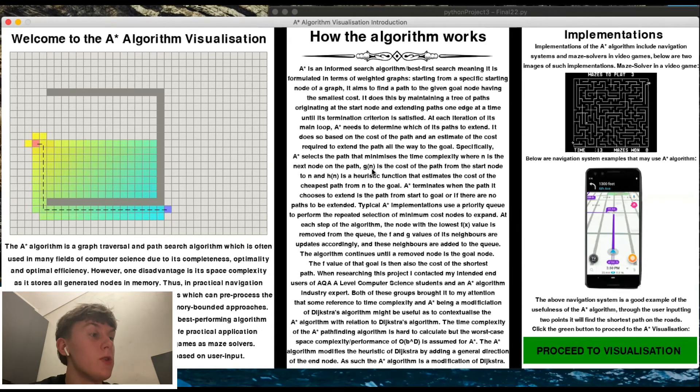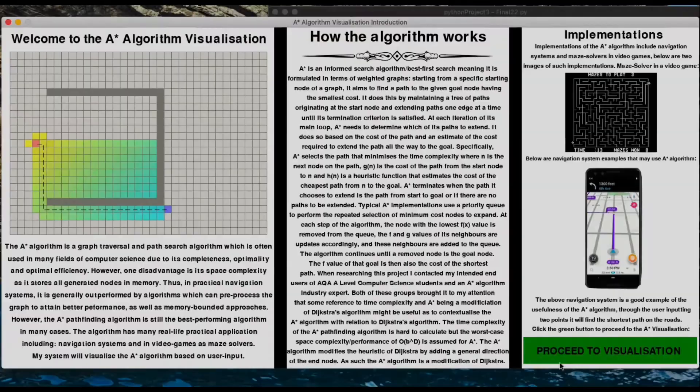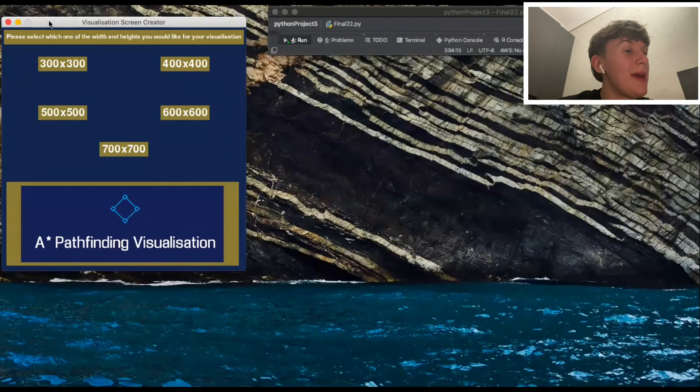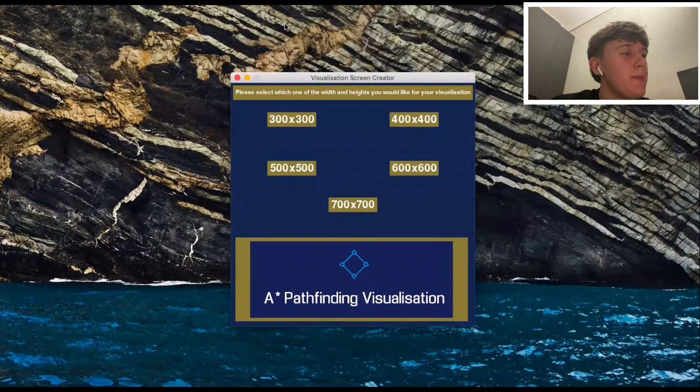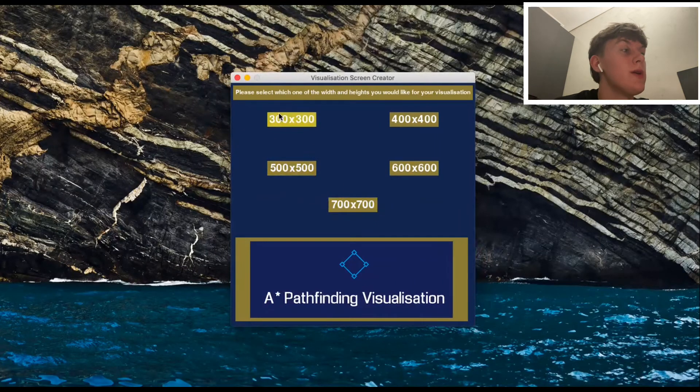So as you can see, the two most common ones are maze solvers in video games and navigation systems. We now get to pick the size of the screen we want. This adds an interactive approach. We then also get to enter the coordinates of our start node and end node.